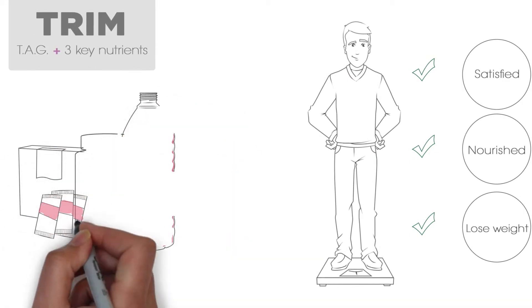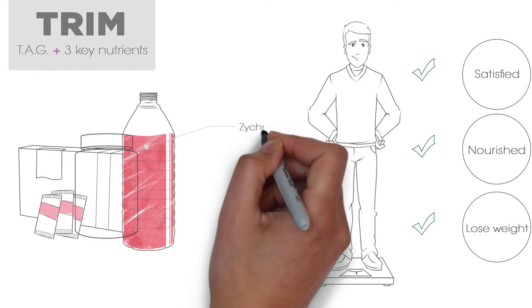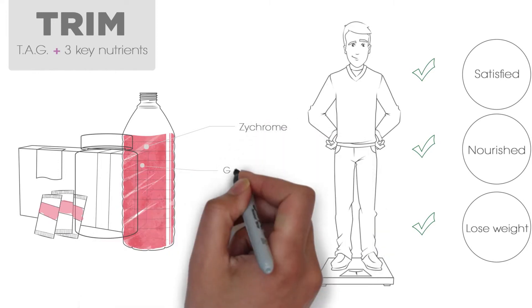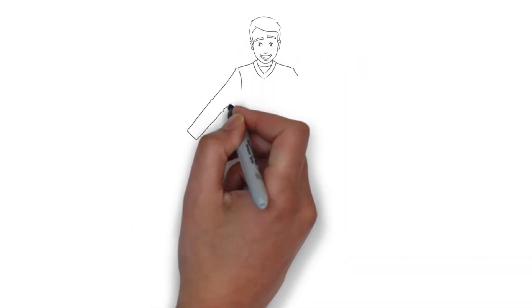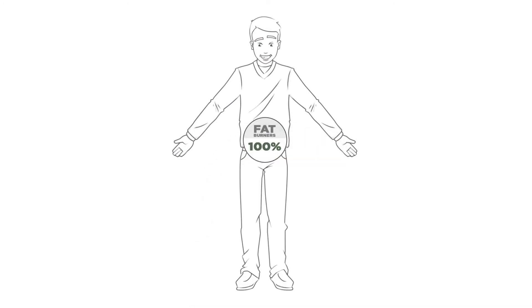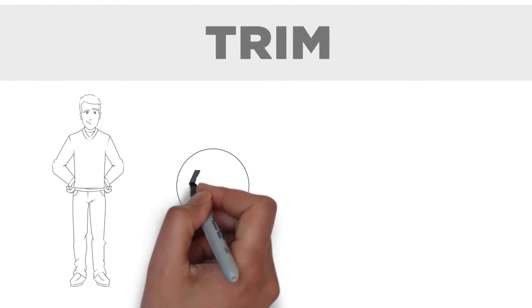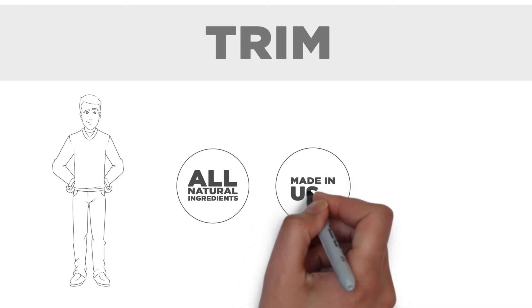Trim is also packed with three key nutrients that promote a healthy metabolism: Zychrome, a patent-pending chromium complex, garcinia cambogia, and raspberry ketones. These three metabolic boosters help kick your fat burners into overdrive. Trim uses the highest quality all-natural ingredients and is made right here in the USA.